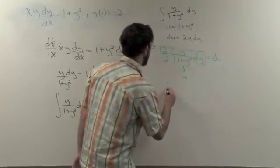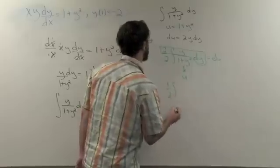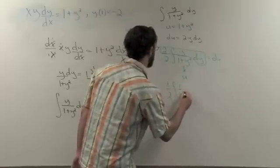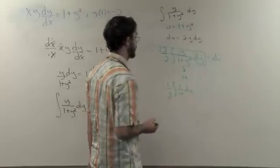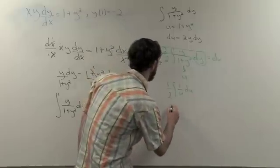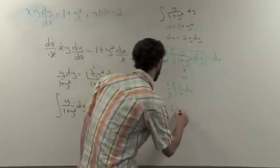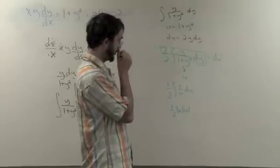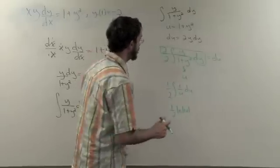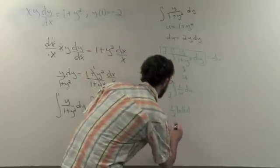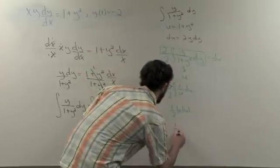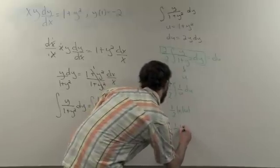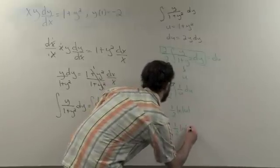This gives us 1 half the integral, 1 over u, du, which integrates nicely into 1 half ln, the absolute value of u. Substituting back in our values, we see that we have 1 half ln, 1 plus y squared.